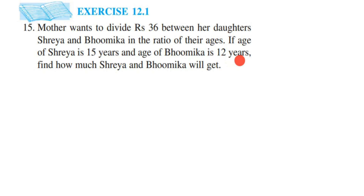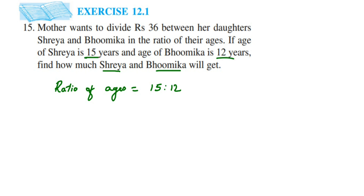The ratio will be the ratio of their ages, so the ratio of ages is 15 is to 12 — first Shreya, then Bhumika. Whenever we write ratios, we always write them in reduced form. Converting to a fraction: 15 by 12 — cancelling by 3 gives us 5 by 4. So the reduced ratio is 5 is to 4.